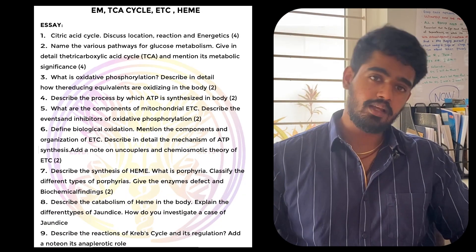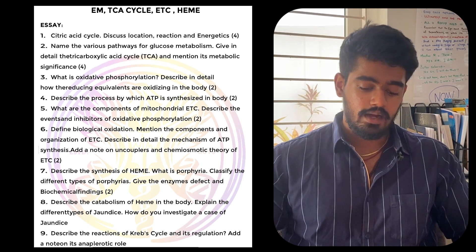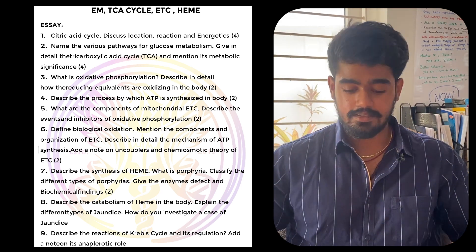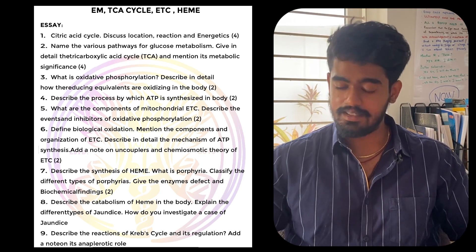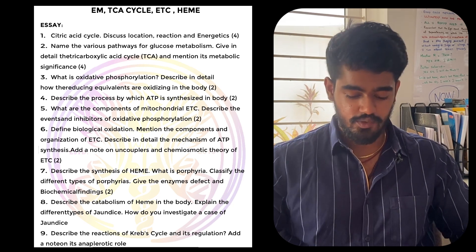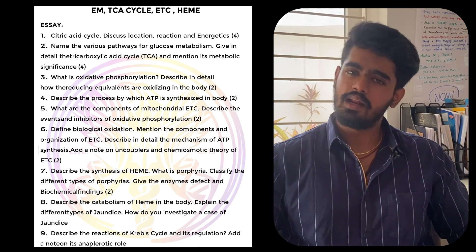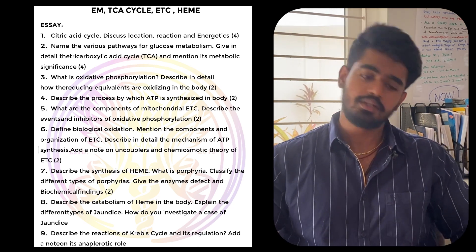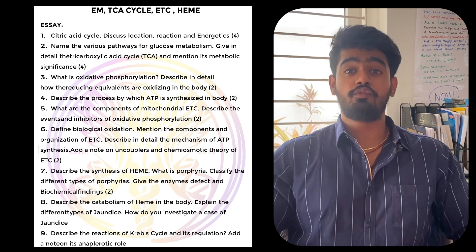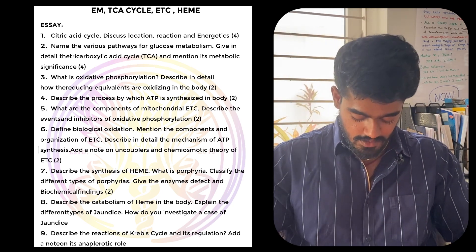For the miscellaneous topics — TCA cycle, ETC, and heme — you have to study the citric acid cycle, which is crazy important. Also study oxidative phosphorylation, heme, porphyria and its clinical manifestations, and the anaplerotic and cataplerotic reactions of the TCA cycle — very very important. Study this for sure.